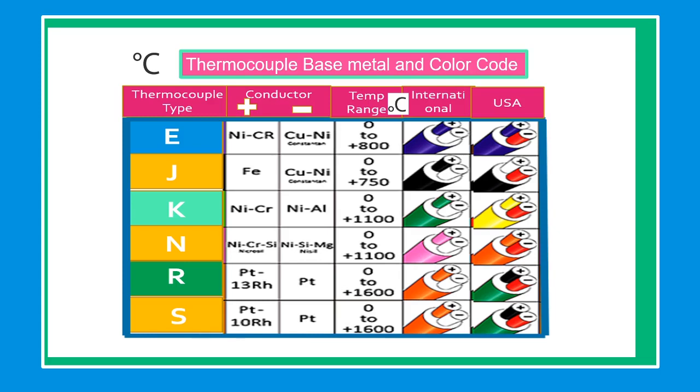Type N thermocouple is having nicrosil as its positive leg and nisil as its negative leg. Nicrosil is having 14% nickel and 1.5% chromium and rest as silicon.